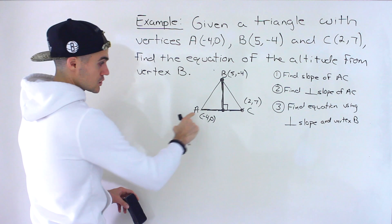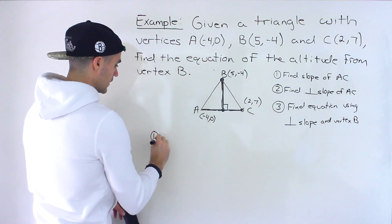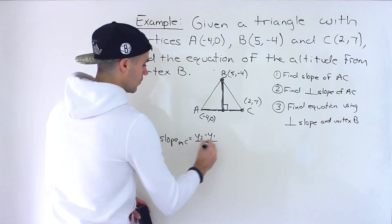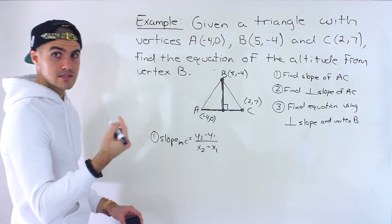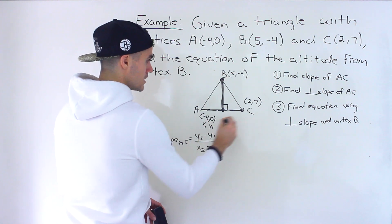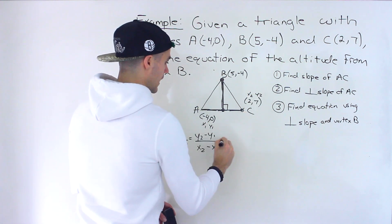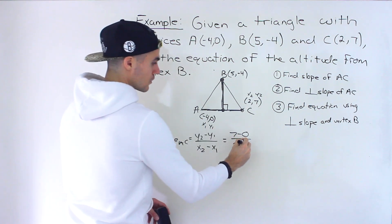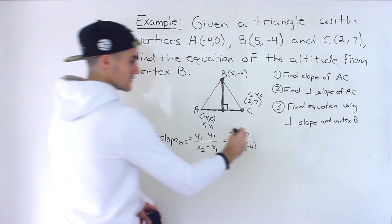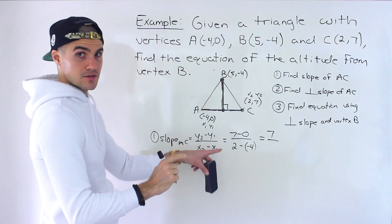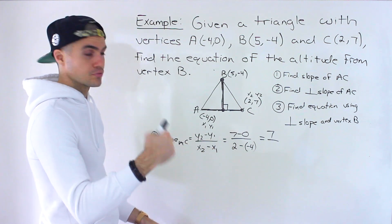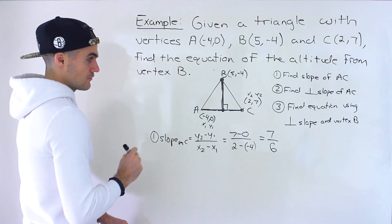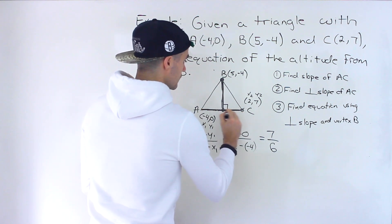Step 1: find the slope of AC. Using rise over run — (y2 - y1) / (x2 - x1) — label A as (x1, y1) = (-4, 0) and C as (x2, y2) = (2, 7). So the slope is (7 - 0) / (2 - (-4)) = 7 / 6. That's the slope of line AC.